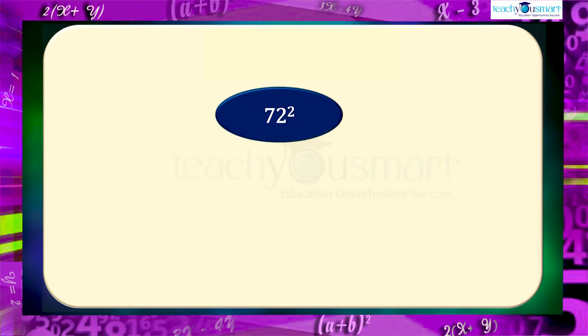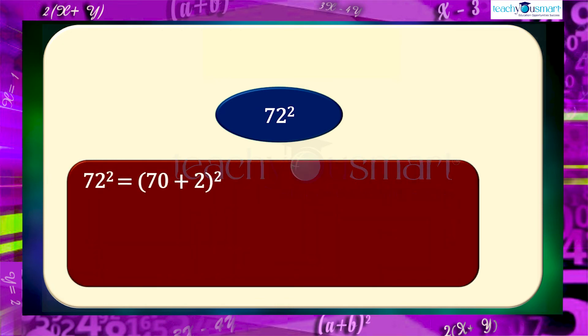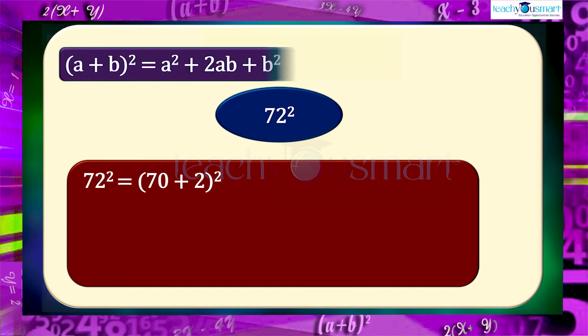Using this identity, how can we find the square of 72? We can express 72² as (70+2)² using this identity (a+b)² = a² + 2ab + b².